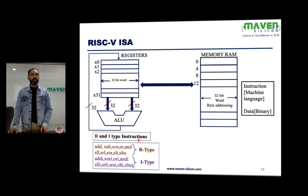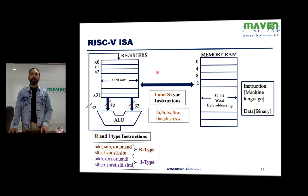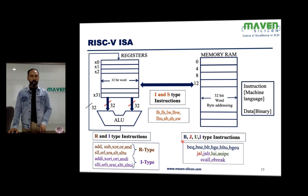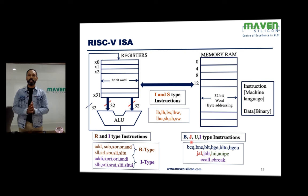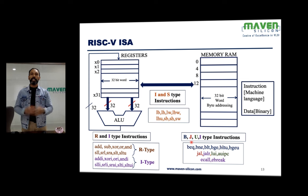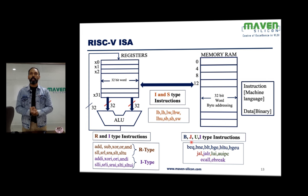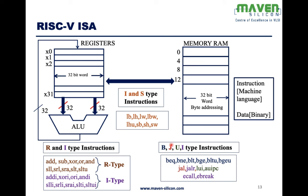R-type (register) and I-type (immediate) instructions handle operations primarily between registers and the ALU. For data flow between registers and memory, I-type and S-type (store) instructions are used. For control flow — changing sequential execution order to implement while loops, for loops, or if-else conditions — B-type (branch) and J-type (jump) instructions are required.